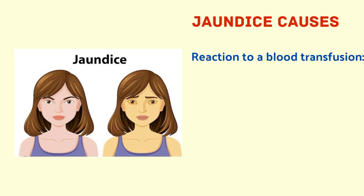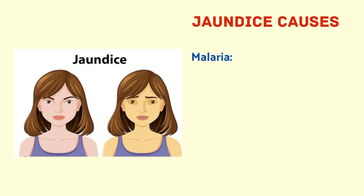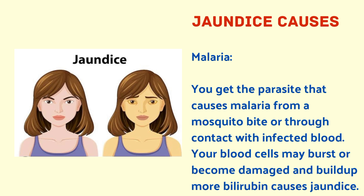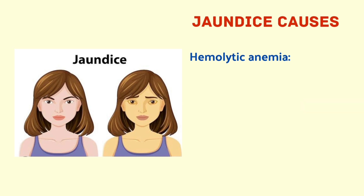The next cause is a reaction to a blood transfusion. If you're given the wrong blood type, your immune system might destroy the wrong blood, releasing more bilirubin and causing jaundice. Next is malaria — the parasite causes red blood cells to burst or become damaged, building up more bilirubin. Next is liver cirrhosis, where scar tissue replaces healthy liver cells, making it harder to process bilirubin and causing jaundice.